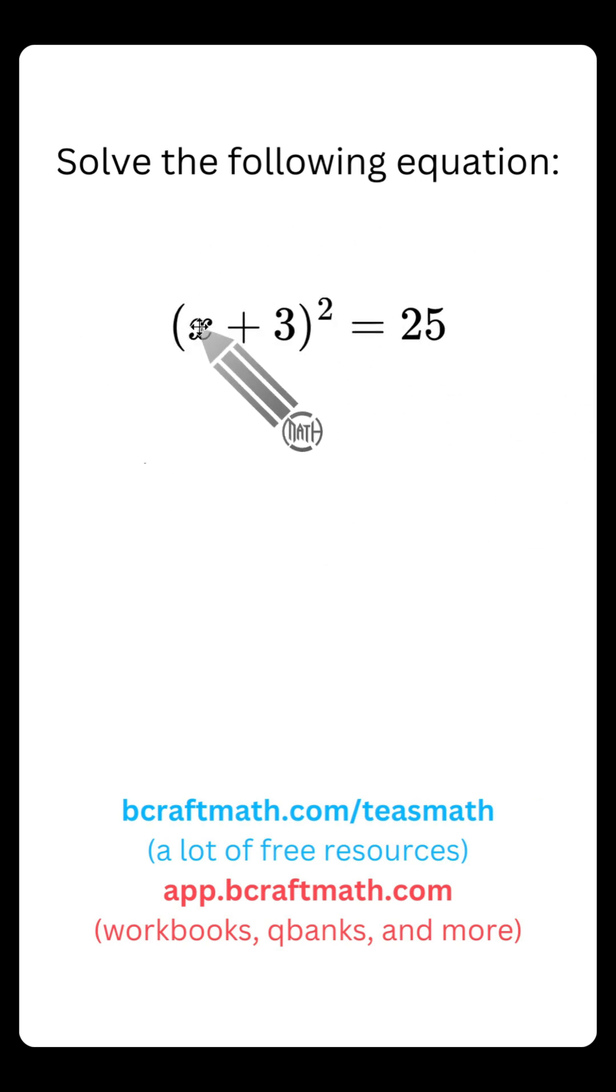We're taking some number, x plus 3, we're squaring all of that, and it needs to be equal to 25. Now before you start moving things around, think about this. Let's suppose x was 2. If you substitute 2 in for x, you would have 2 plus 3, that gives you 5, and you square that 5, that means 5 times 5, and don't you get 25. That means 2 is a solution to this equation. But that's not the only solution.